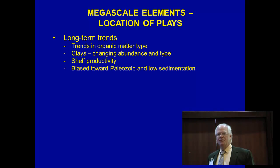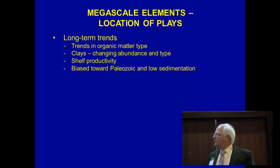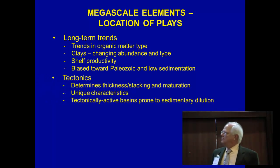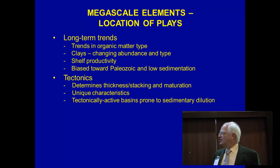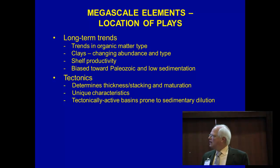Clays also probably change over time because before you have land plants to hold down soils and provide organic acids to break them down, you don't get much laterite weathering onshore. In the lower Paleozoic, kaolinite is pretty rare — you can get it by weathering volcanic ash, but it's a lot less common. Shelf productivity probably increases as you go into the Mesozoic and Cenozoic. Tectonics also bear on where organic-rich shales are deposited, determining overall thickness, stacking, and maturation. Climate, circulation, currents, and sediment input all have a lot to do with where you find these things.